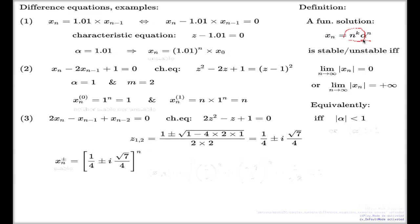Obviously, if alpha is less than one in absolute value — something you should know well from the first semester — exponential decay is always quicker than polynomial growth. So if the absolute value of alpha is less than one, the exponential factor will dominate the product and the whole limit will go to zero. Your solution is stable when |α| < 1. If |α| > 1, then the solution is unstable.